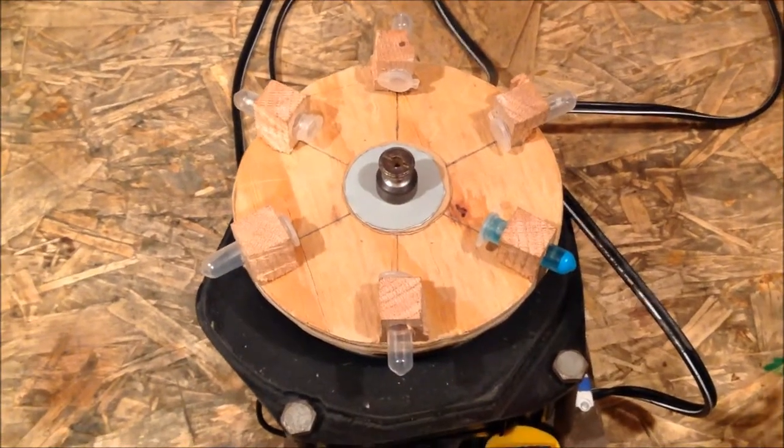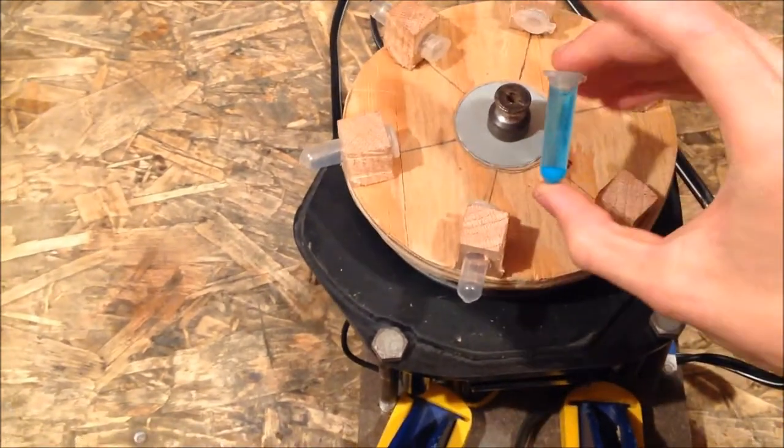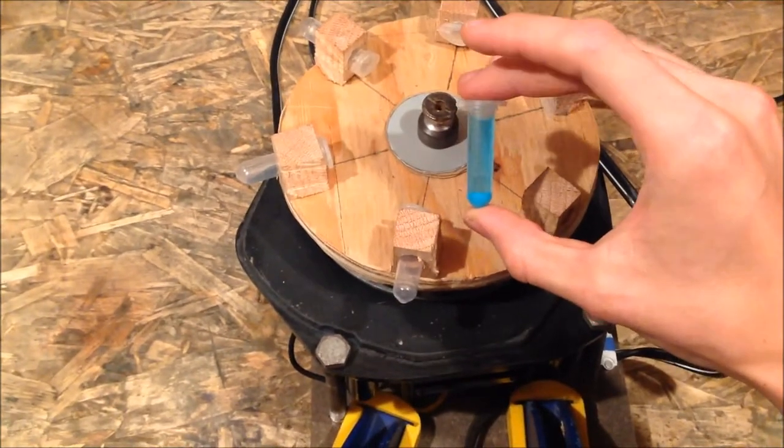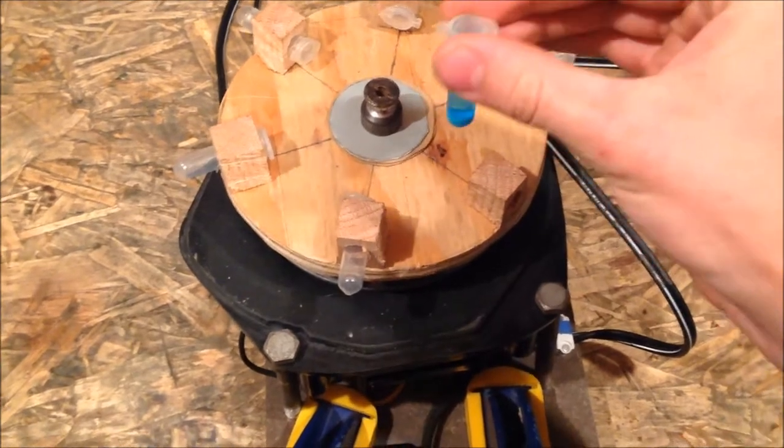After about a minute of centrifuging, all of the precipitate has settled to the bottom, as you can see here. The solution is still blue, which means that there is still some unreacted copper sulfate in the mix. But all of the copper carbonate is now at the bottom.